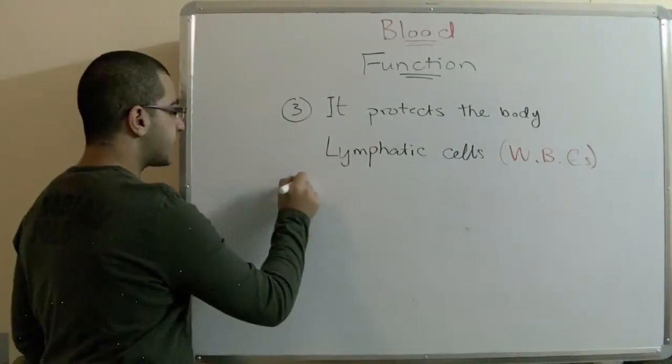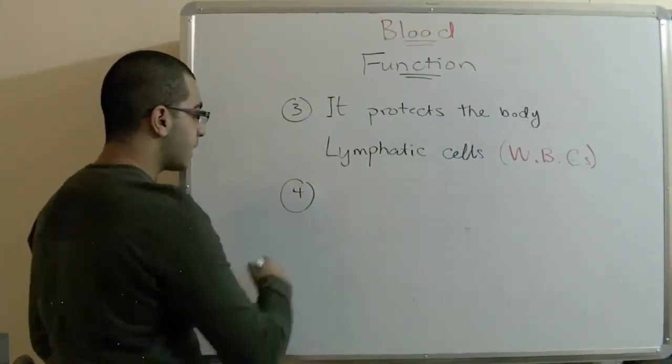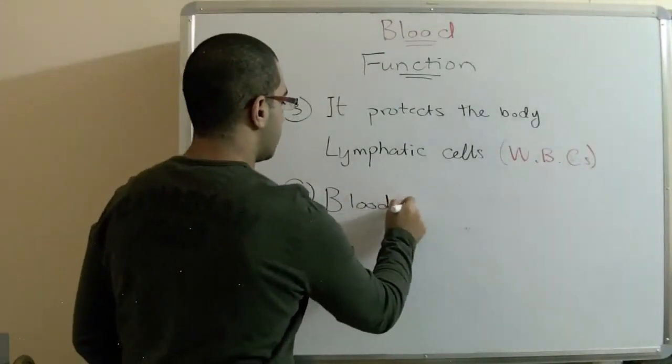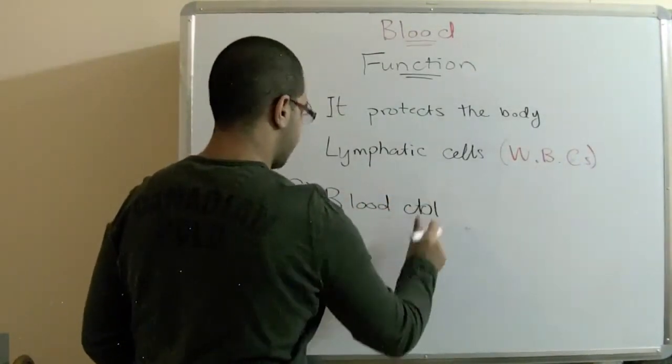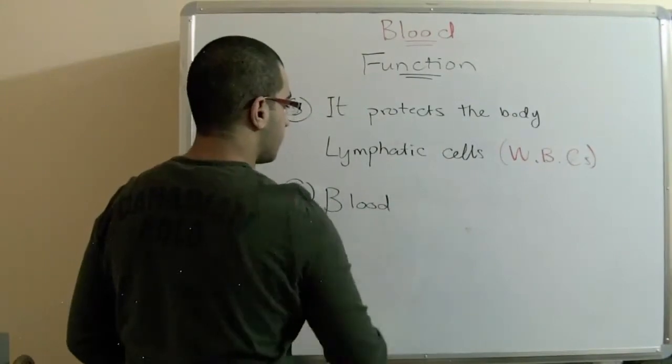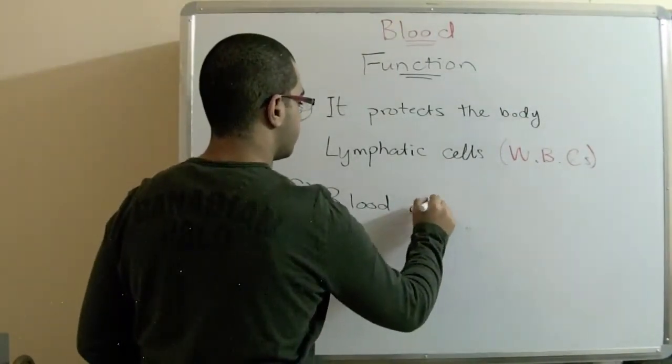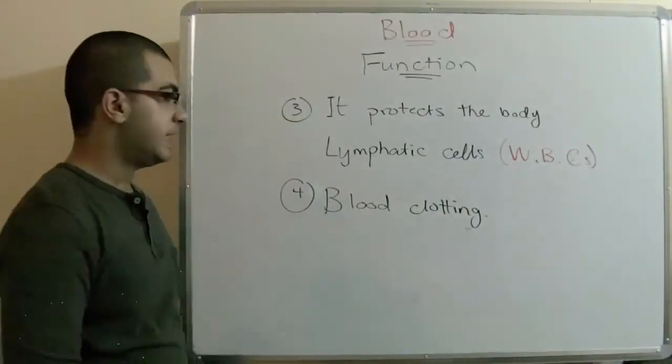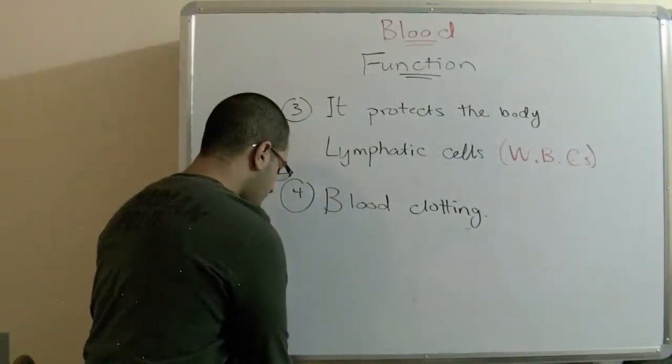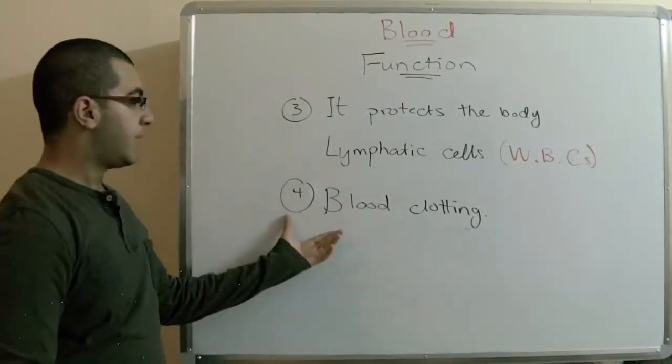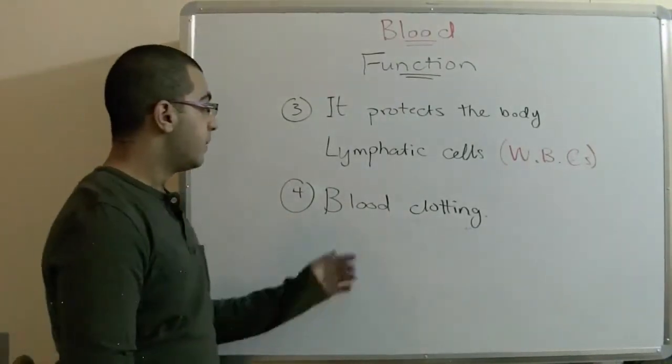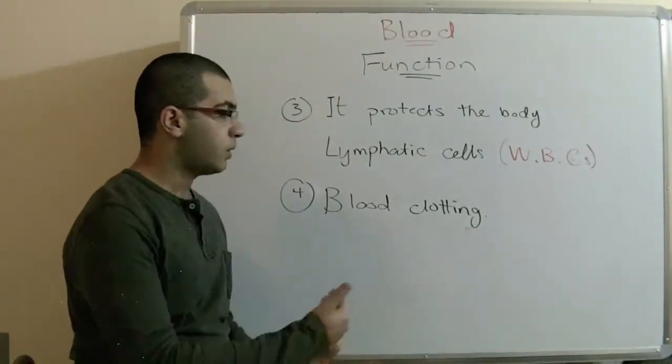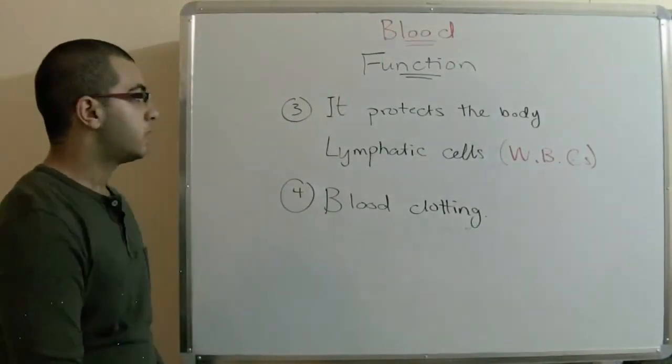And at last, the blood protects itself through the action which is called blood clotting. When a blood vessel is cut or torn, as what happens in wounds, the blood clotting takes action. And we'll talk about blood clotting in the next videos.